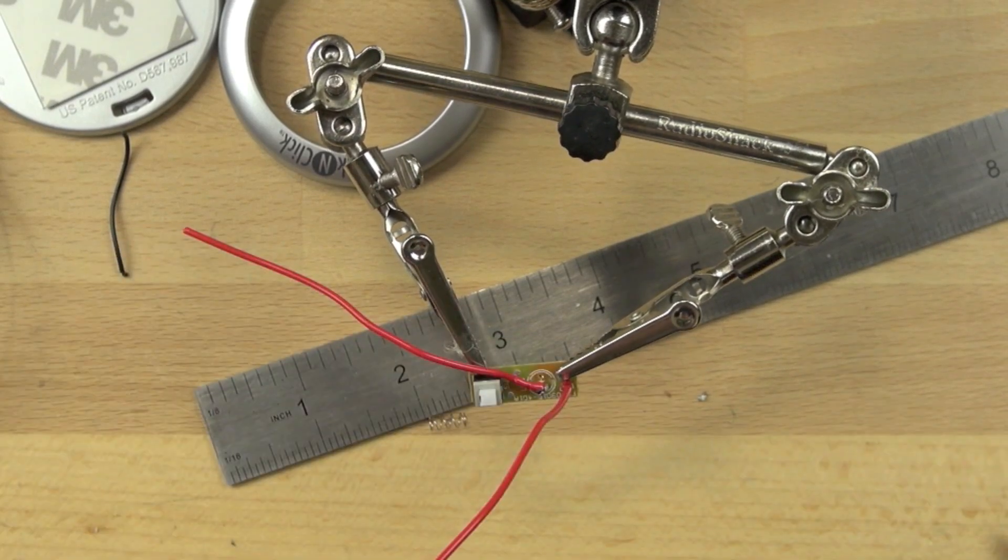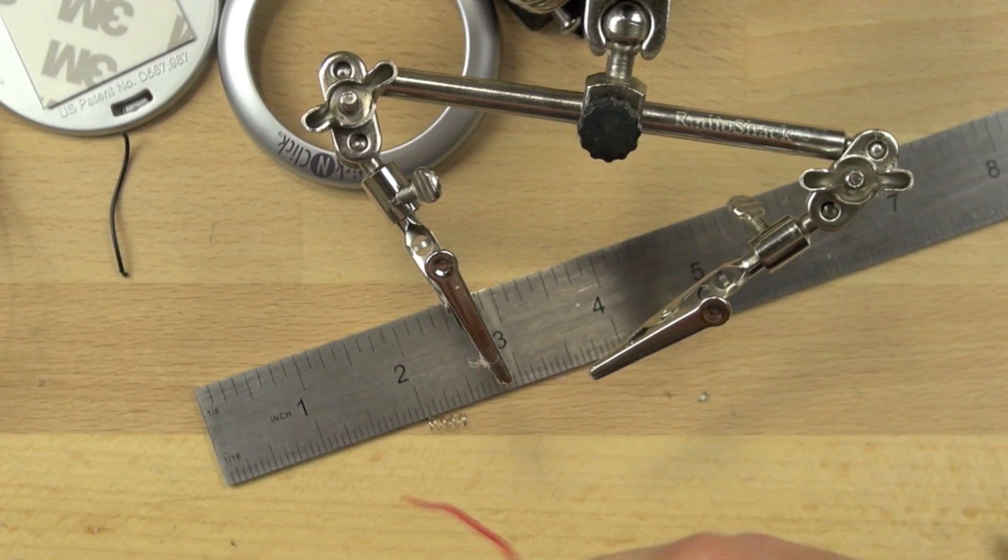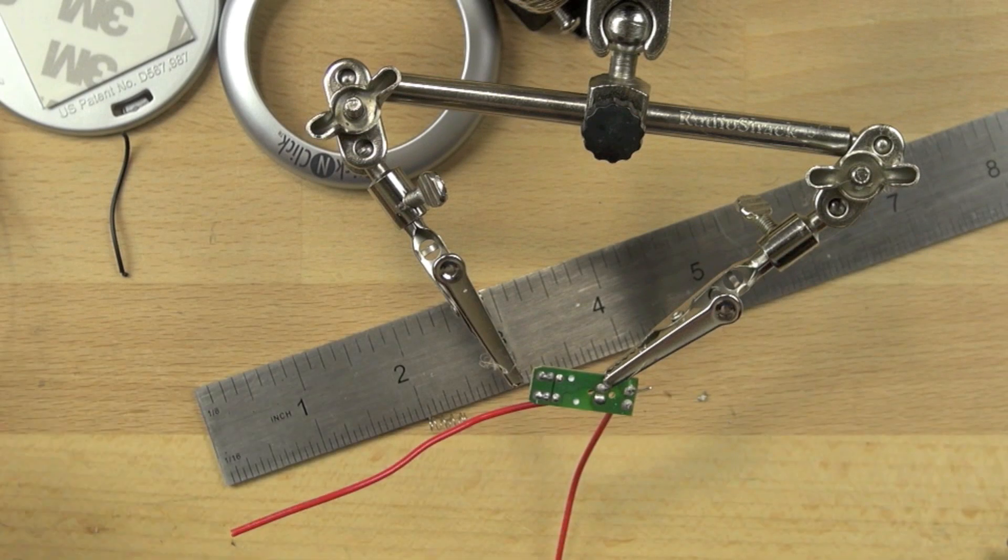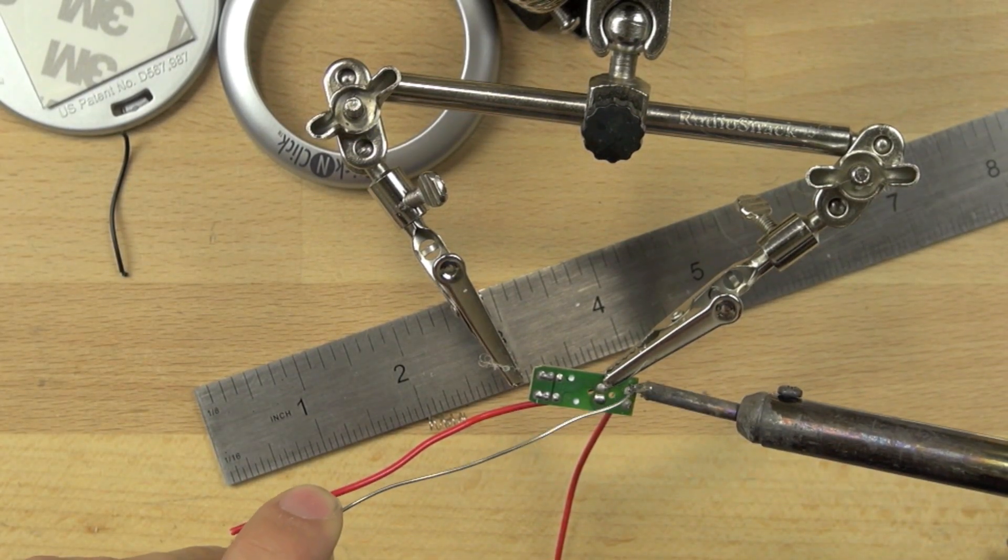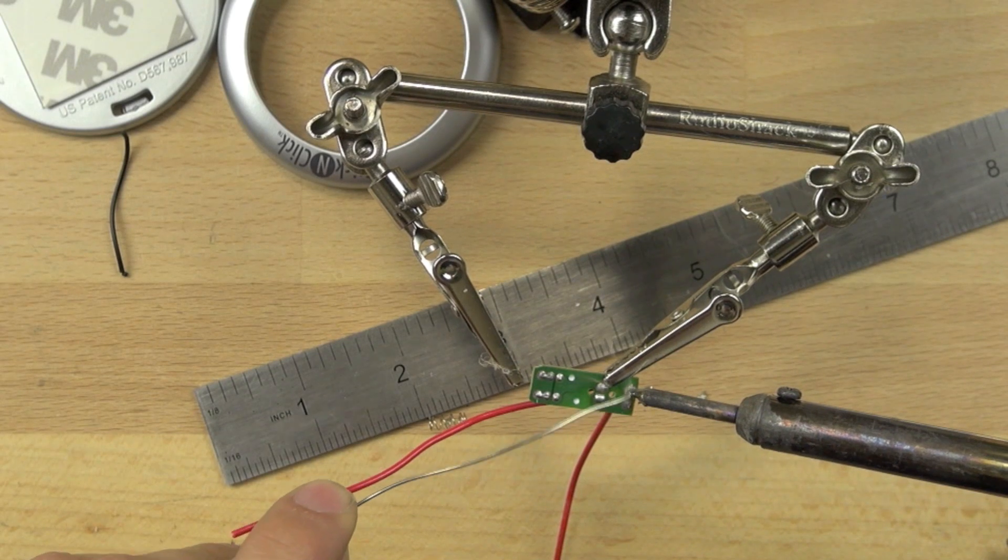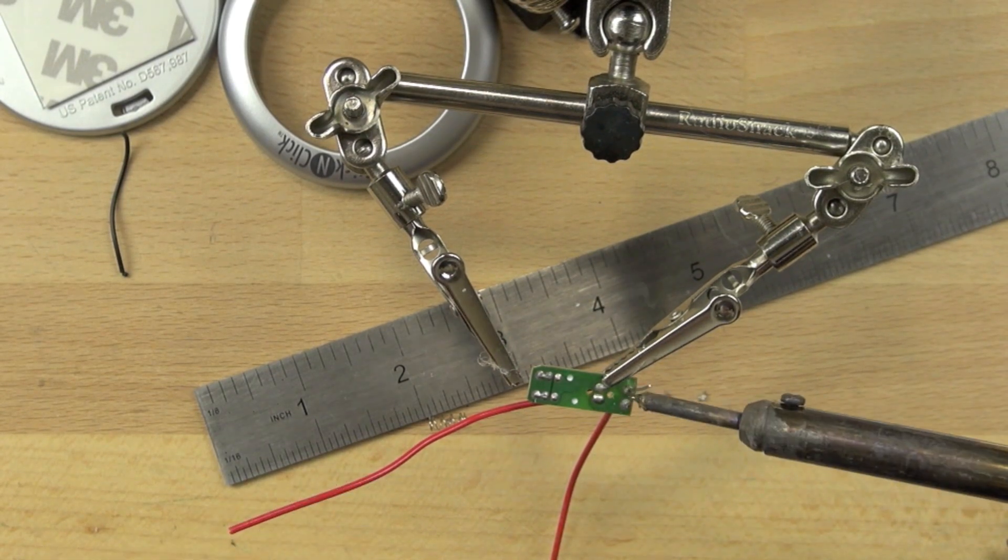So now we're heating up the wire and we're going to push it through the other side. And now we've got the other side of the connection that we need to make. We're just going to heat that up and put some more solder on it to make sure that that connection is a solid connection.